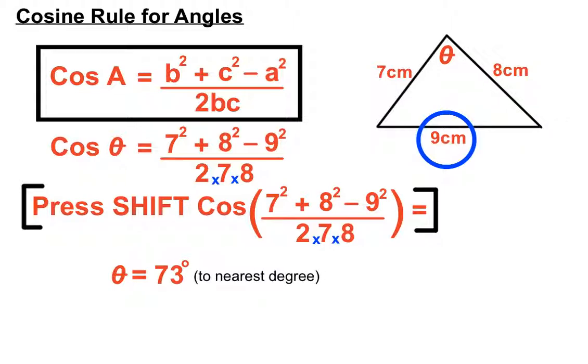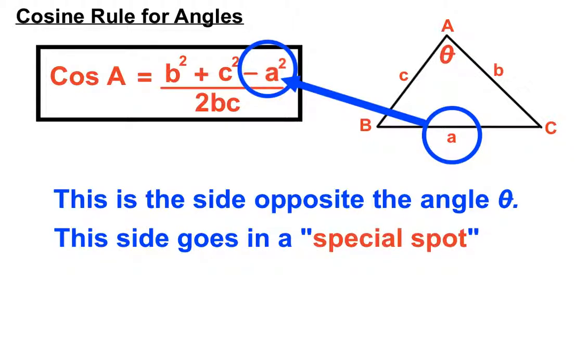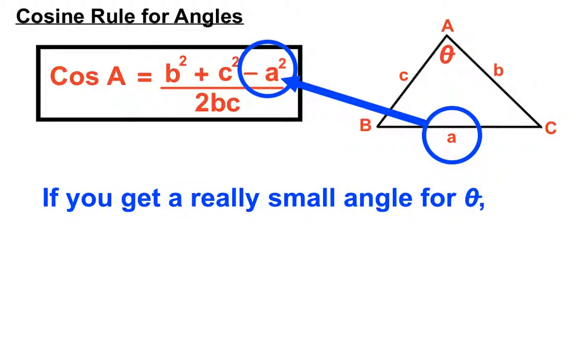Just to recap there, we picked one of the sides. We've given three sides and we had to find one of the angles. This is the side that we're treating very specially in this case because it's the side that's opposite the angle we are trying to find out. The other two sides just get substituted into the formula on this section here. We have to remember to press shift cos because we're finding an angle. The side that's opposite the angle that we're trying to find is treated specially. It has a minus in front of it.